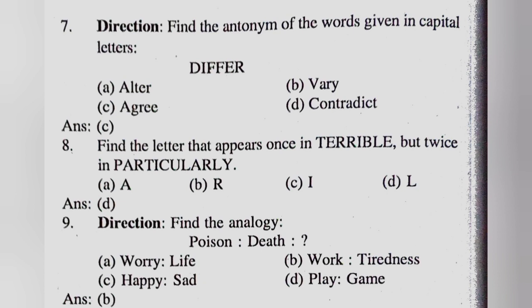Next question: find the analogy. Poison is to death. Option A: worry is to life. Option B: work is to tiredness. Option C: happy is to sad. And option D: play is to game. So your correct answer is option B, work is to tiredness.